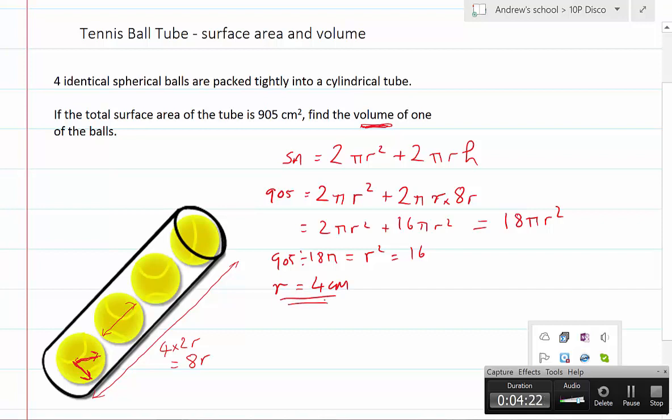So the radius of one of the tennis balls is 4 cm. So the volume from the formula sheet is 4/3 times π times r³. 4/3 times π times 4³.